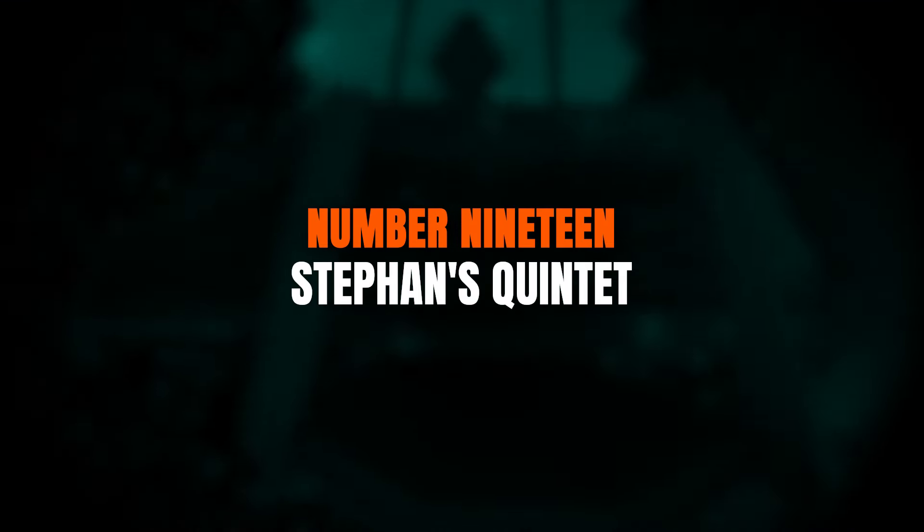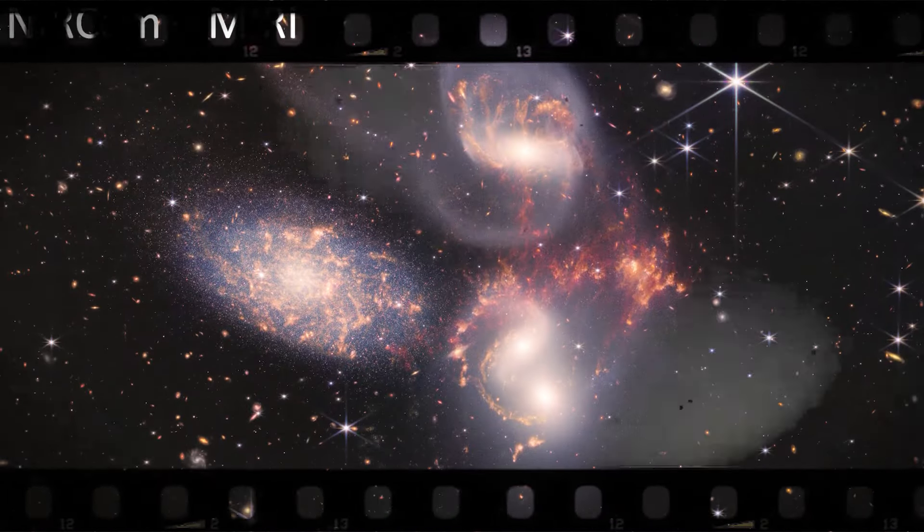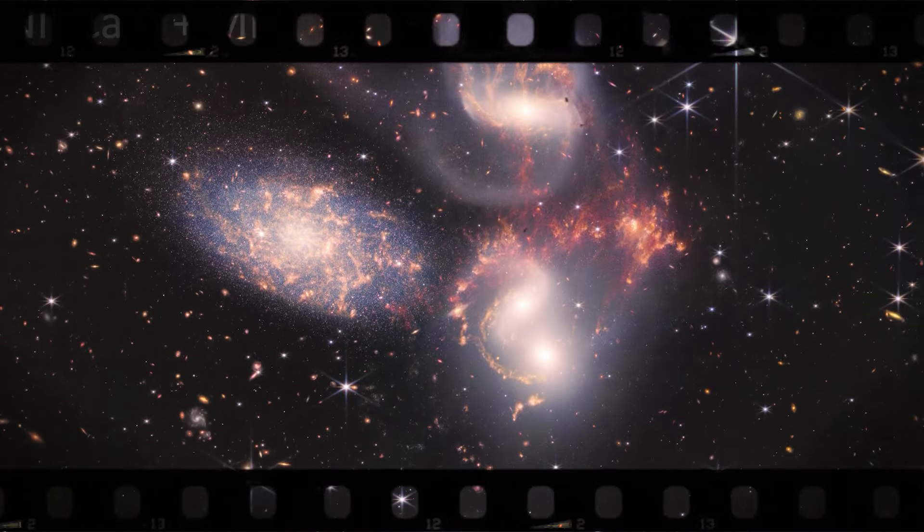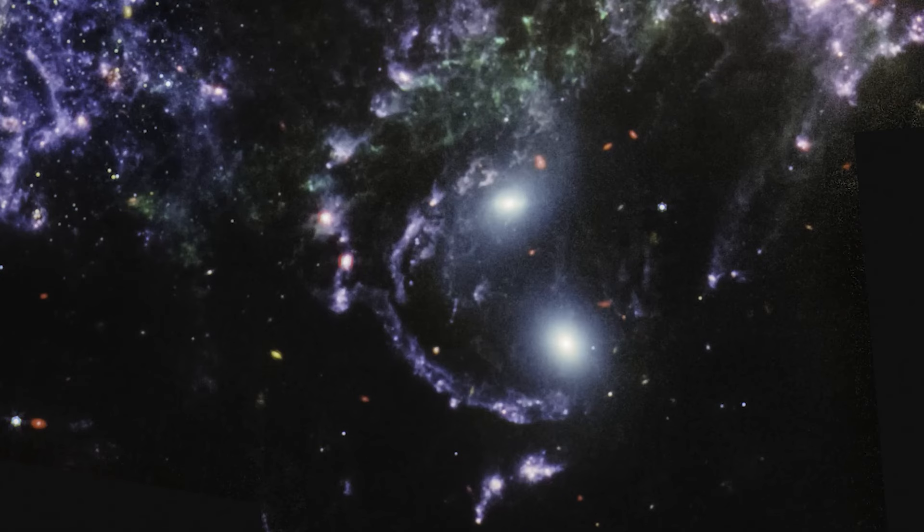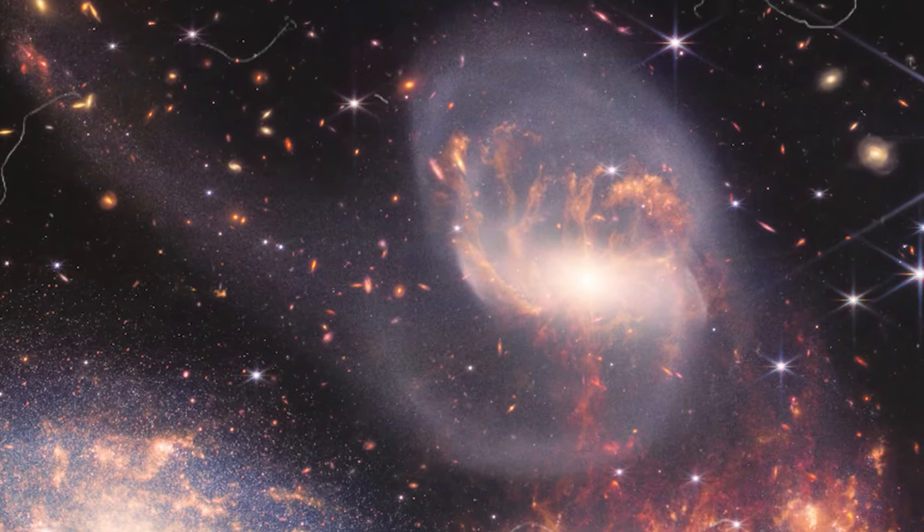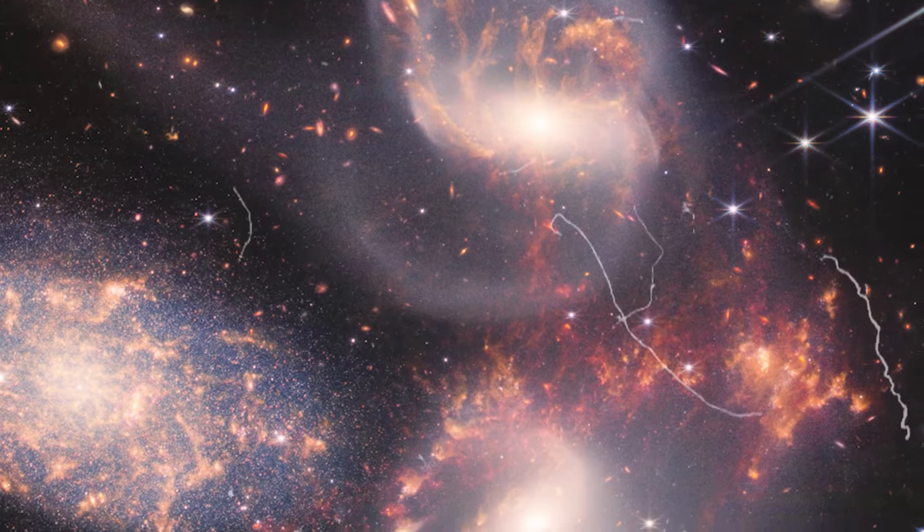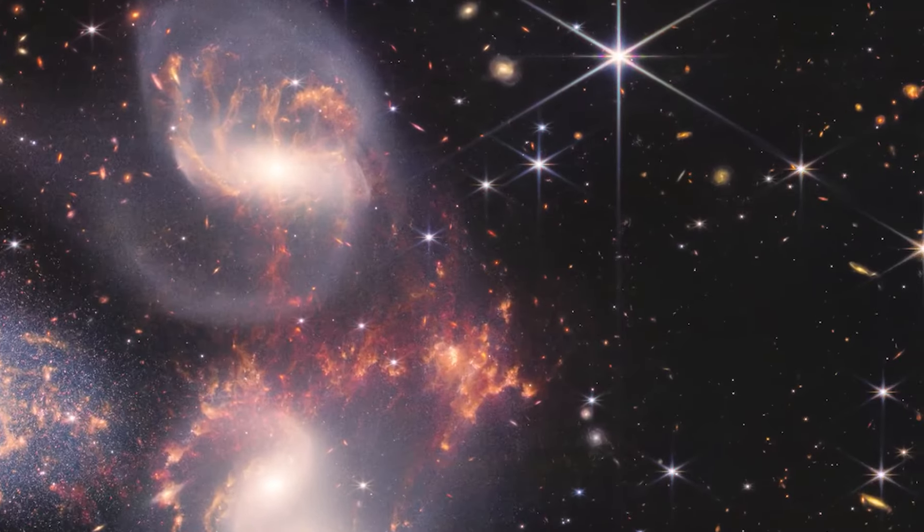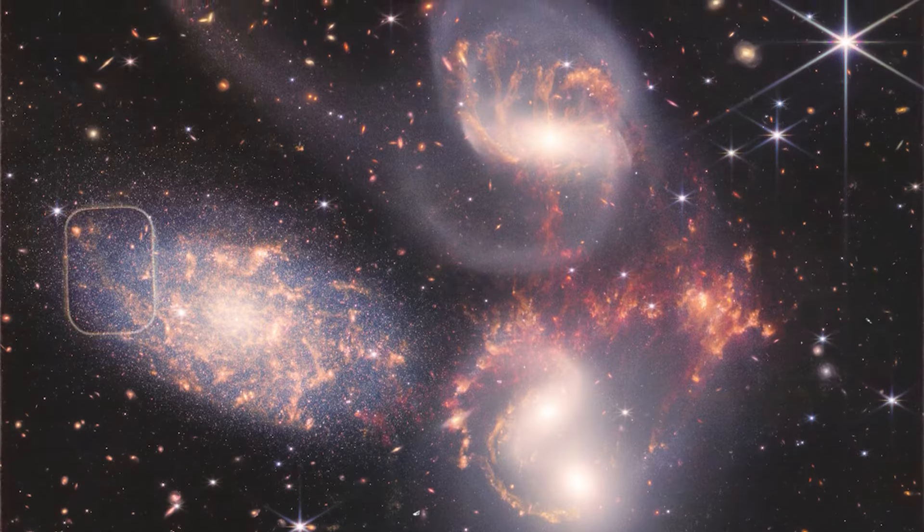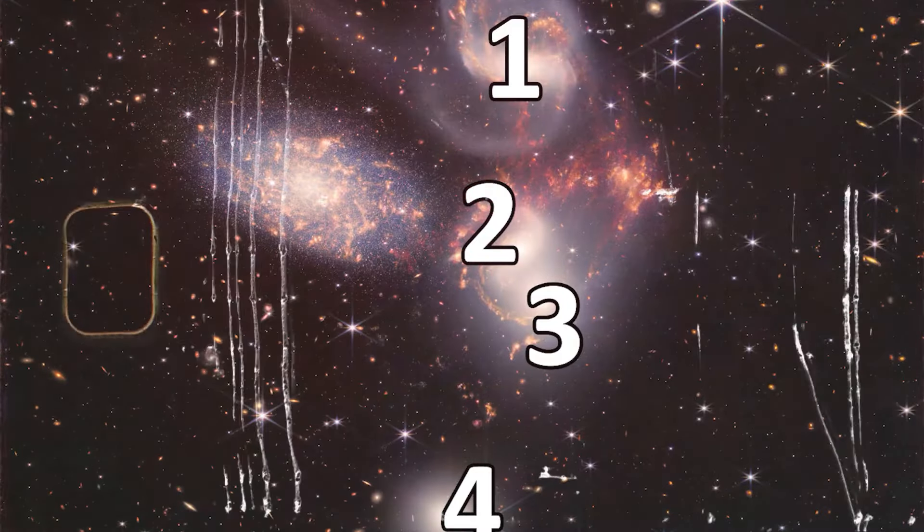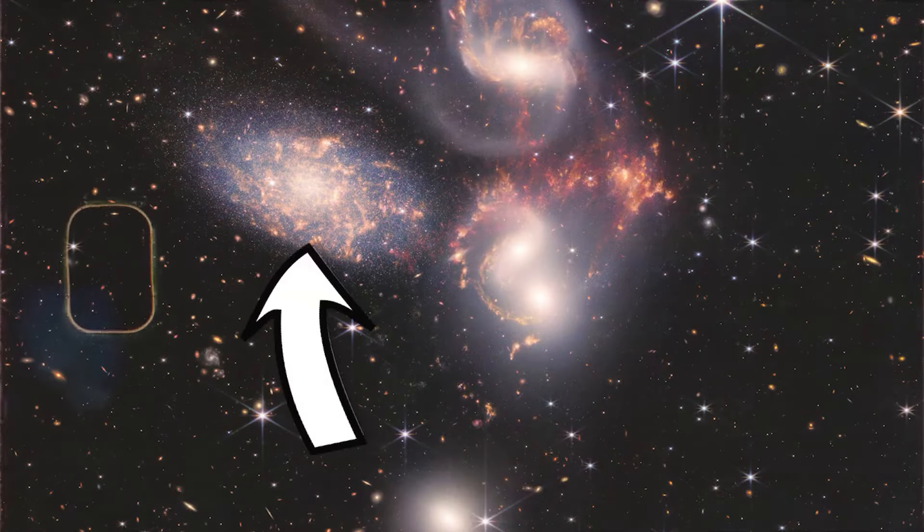Number 19. Stefan's Quintet. Stefan's Quintet is a stunning group of five galaxies, four of which are gravitationally interacting with each other. The fifth galaxy, while appearing to be part of the group, is actually in the foreground. This complex dance of galaxies provides a unique opportunity to study the processes that shape the cosmos. Clusters like Stefan's Quintet are more than just visually stunning. They are cosmic laboratories, where we can observe how galaxies interact, and sometimes merge.